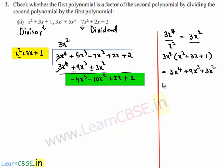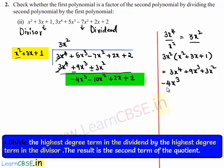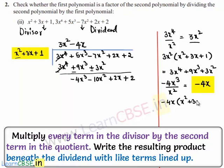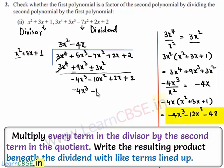The new dividend has highest degree term minus 4x³ and the divisor has highest degree term x². On dividing them we get minus 4x, which can be written at the place of the quotient. Now minus 4x multiplied by the divisor x² plus 3x plus 1 gives minus 4x³ minus 12x² minus 4x. This product is written here.